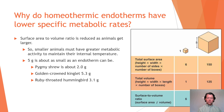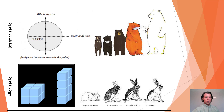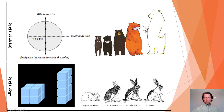This leads to two ecological rules. Bergmann's rule states that body size tends to increase as you move toward the poles — polar bears are much larger than other bears for this reason. Allen's rule states that limbs become shorter toward the poles. The snowshoe hare has much smaller ears and shorter limbs than the jackrabbit; the jackrabbit's large ears function as thermal windows and counter-current heat exchangers, allowing it to dissipate extra heat.